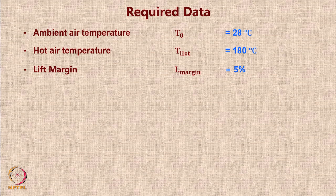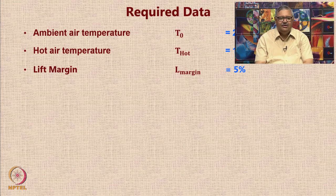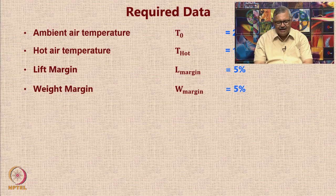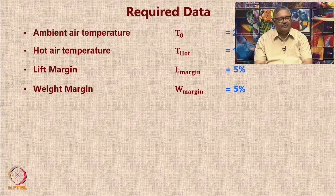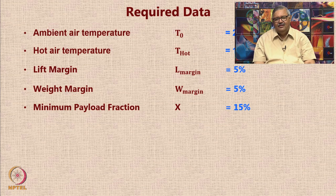You will calculate the available net lift as lift minus weight, but I would advise keeping some margin — do not work totally on the brink because once you make the balloon you really cannot make changes. We recommend a 5 percent margin in the lift. Similarly, you will estimate the weight of various components; a 5 percent margin means the actual weight will come in less than planned. The minimum payload fraction must be 15 percent.